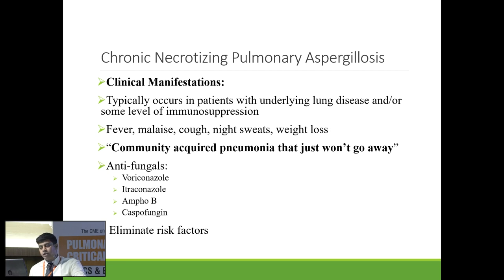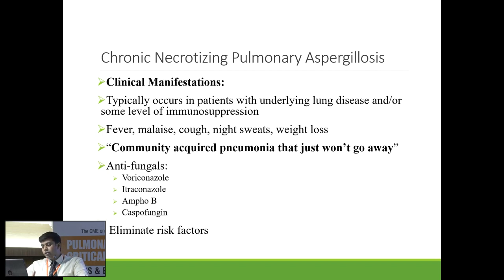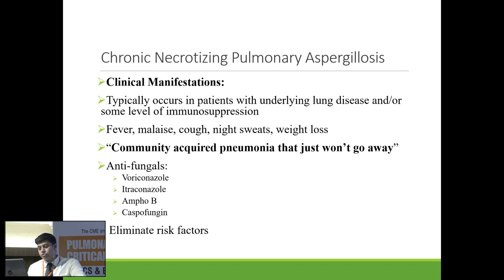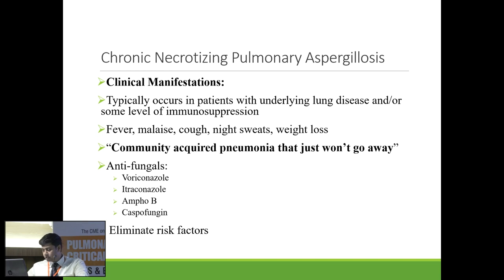Chronic necrotizing pulmonary Aspergillosis is an increasingly recognized entity occurring in patients with pre-existing lung disease or some level of immunosuppression. Symptoms include fever, malaise, cough, and night sweats. A key clinical clue: it is a community-acquired pneumonia that doesn't go away. If the patient is not responsive to antibiotic therapy, consider chronic necrotizing pulmonary Aspergillosis. Treatment is with azoles — Voriconazole and Itraconazole. For severe patients, Amphotericin B and Caspofungin can be tried. The main treatment remains eliminating the risk factor, such as controlling uncontrolled diabetes.